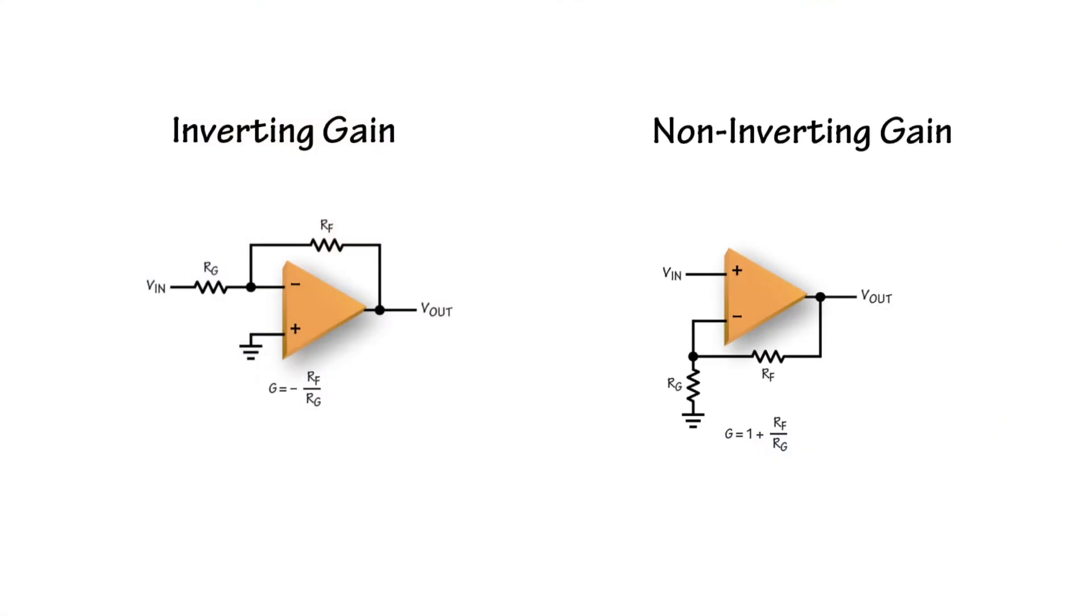For an op amp in non-inverting gain, the configuration and gain equation is slightly different, but the same considerations apply. Again, resistor mismatch causes gain error.